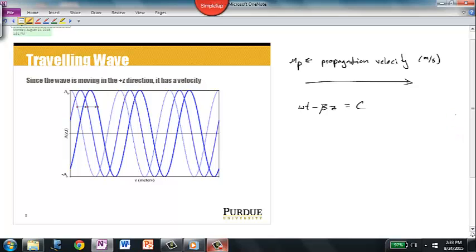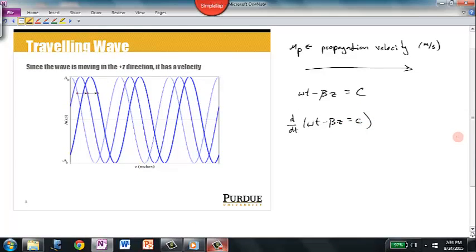And velocity, mu sub p, is how fast something is changing position with respect to time. And if we've got a position function in radians to determine how fast something's moving, we just need to take the derivative of that. So what we will find is that we would take the derivative of omega t minus beta z is equal to c. We need to take the derivative of that entire function and it will tell us how fast this is going.